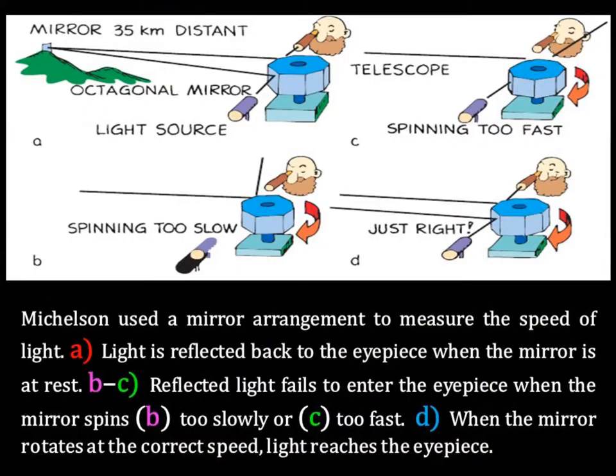This is the Michelson's experiment. Michelson used a mirror arrangement to observe the speed of light. Light is reflected back to the eyepiece when the mirror is at rest. Reflected light fails to enter the eyepiece when the mirror spins too slowly or too fast. When the mirror rotates at correct speeds, light reaches the eyepiece. The secret of understanding this particular section on the Michelson experiment is to make sure that you understand very fully the drawing of Michelson and the spinning octagonal box.